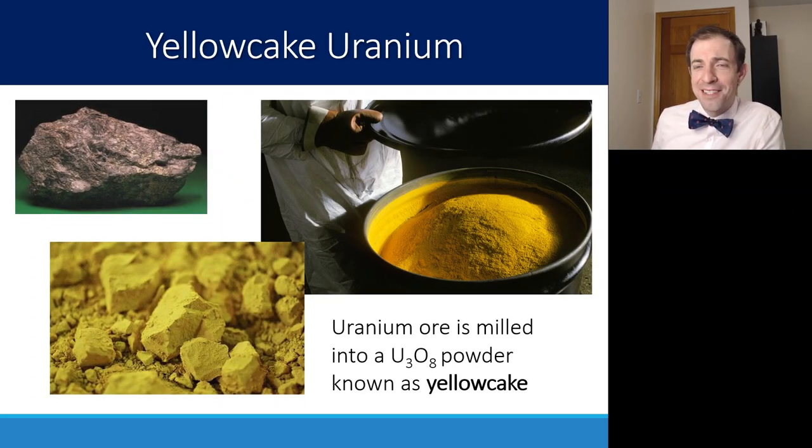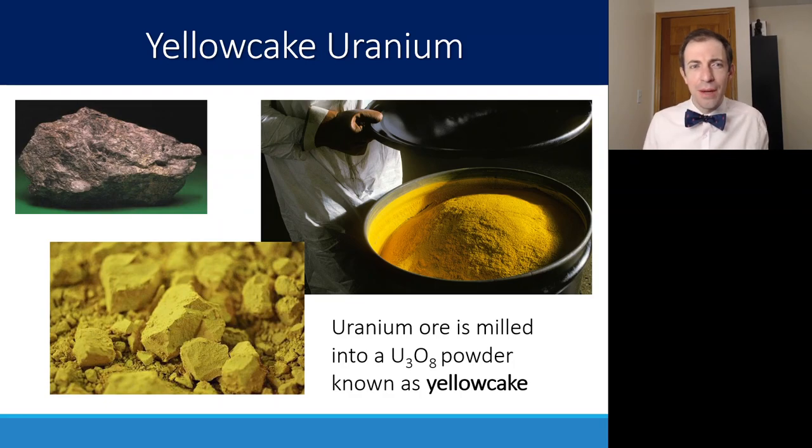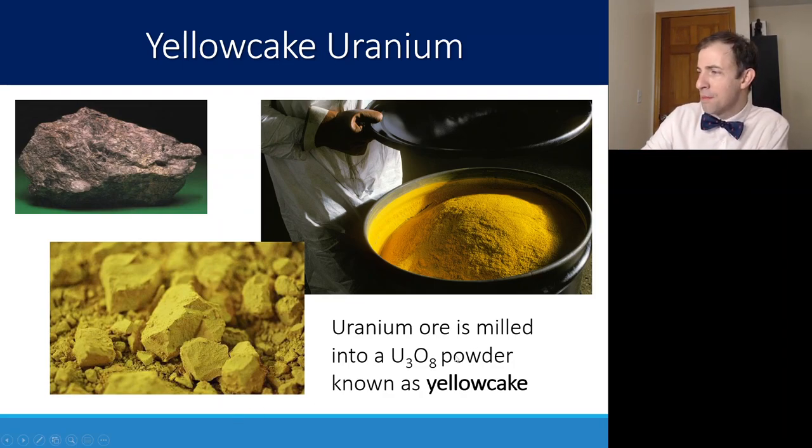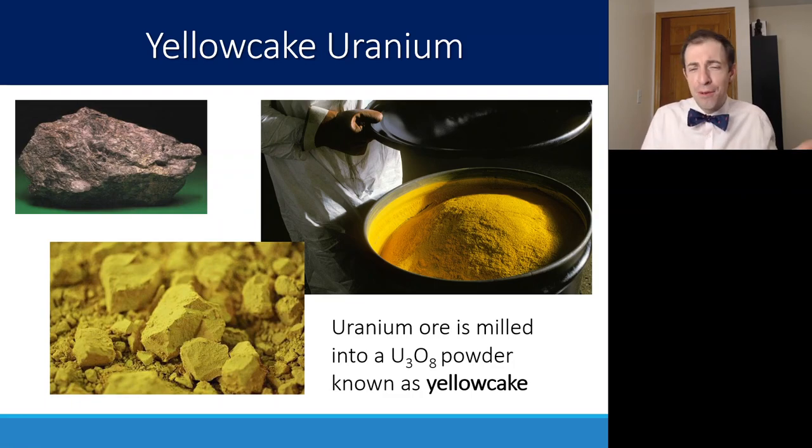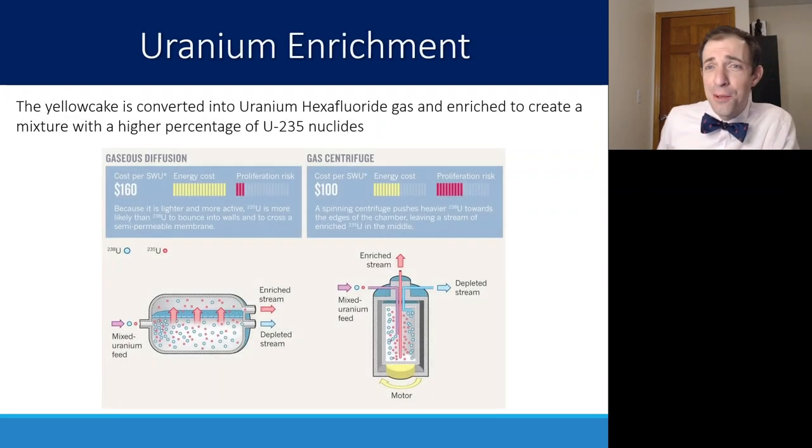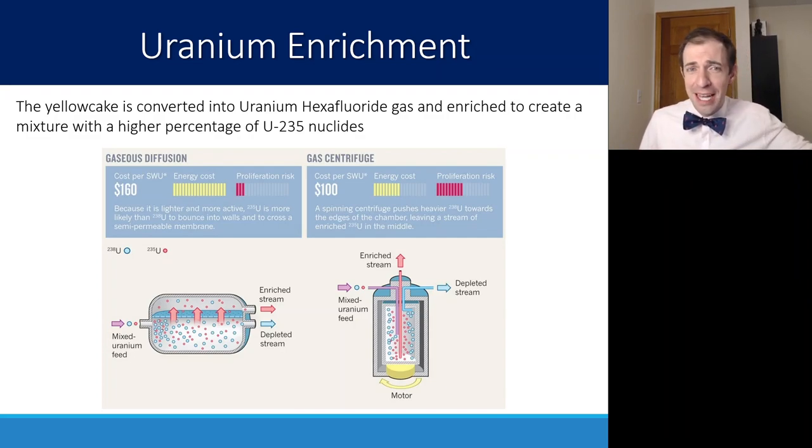This uranium ore is not a very concentrated form of uranium. If you're transporting that, you'd end up transporting mostly the mass of the rock. So instead, it is milled down into a powder and merged with oxygen to create what's known as yellow cake uranium. It's not as delicious as it sounds. This powder here is a lot easier to transport, but it's still in the same percent abundances that it was before. So it's primarily U-238 still. What we need to do next is to enrich that uranium.